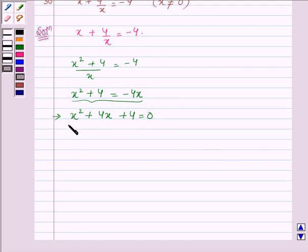Now, this equation can be written as x squared plus 2x plus 2x plus 4 equals 0, which we got by splitting the middle term, 4x.